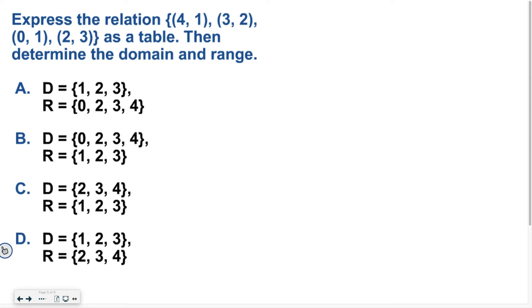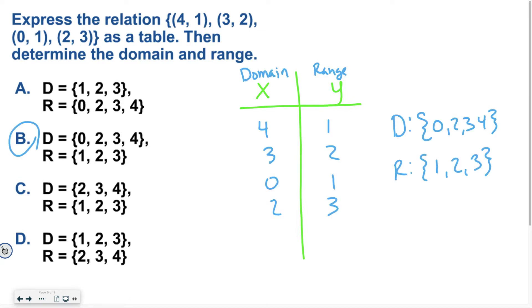Why don't you express the relation (4, 1), (3, 2), (0, 1), and (2, 3) as a table, then determine the domain and range. So on your piece of paper, on your notes, just break it up like this. Make your table, and then select the correct domain and range. Good luck. Hopefully, you ended up at letter B. Your table should have looked something like what I have written on the board. And then your domain is all of your x values, and your range is all of your y's. If you have questions about that, please be sure to ask for help.